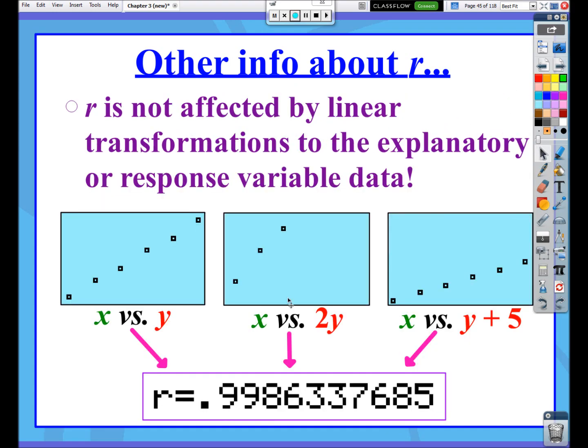And then correlation is not affected by linear transformations to the explanatory or response variable data sets. So if I were looking at x versus y, if I was looking at my explanatory versus response, or if I said, well, let me take my response variable and let me double all the numbers. Now, you might notice here, you only see three of my data points here, and that would be these first three numbers. The other three are just kind of up off the graph. I would need to zoom nine and readjust my screen here.